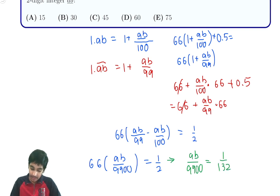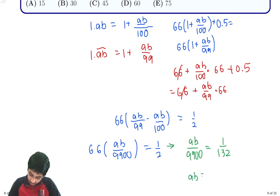We can see that AB over 99 minus AB over 100 equals 1 over 132. And then we can see that AB is just going to equal 99 over 132.